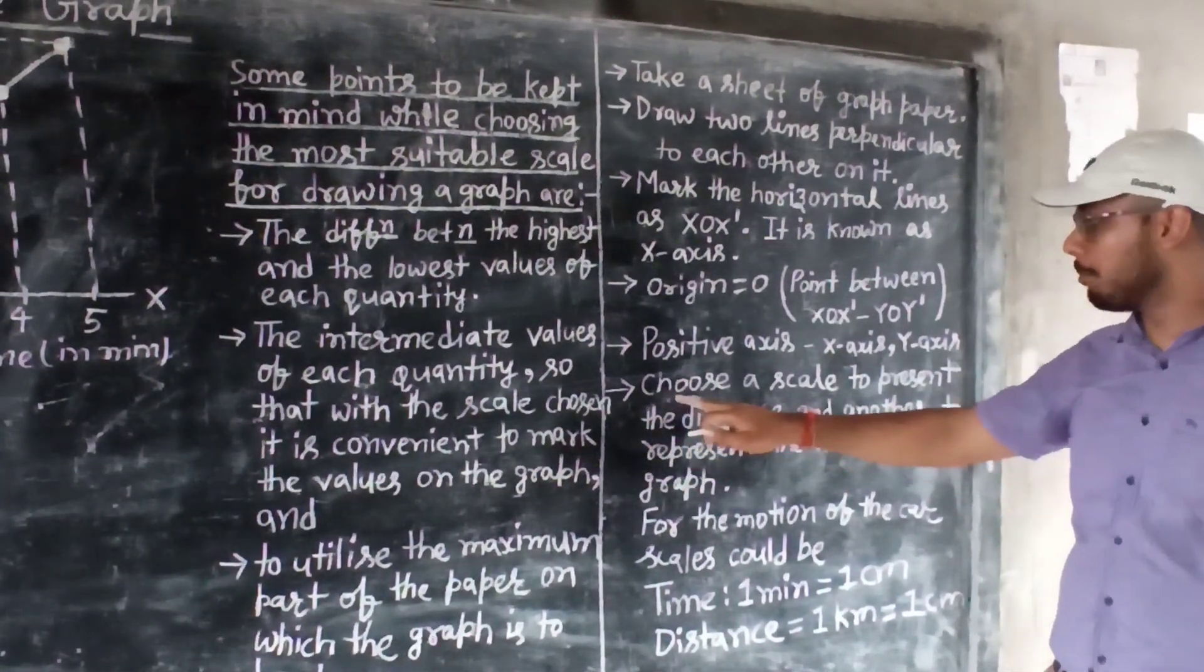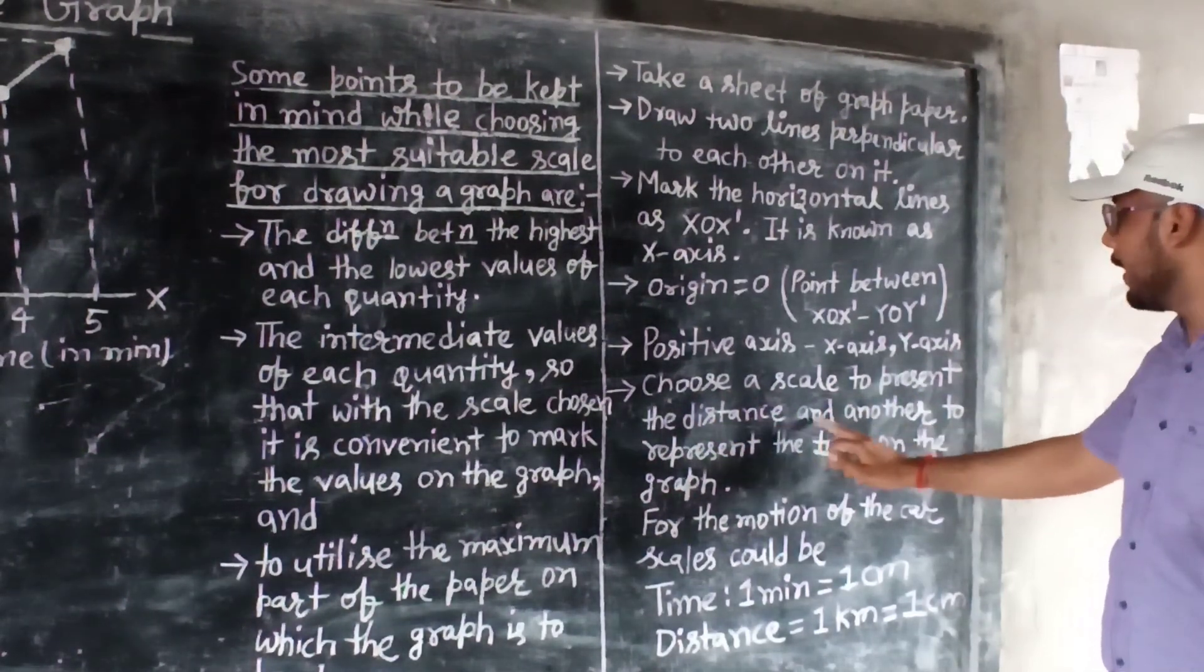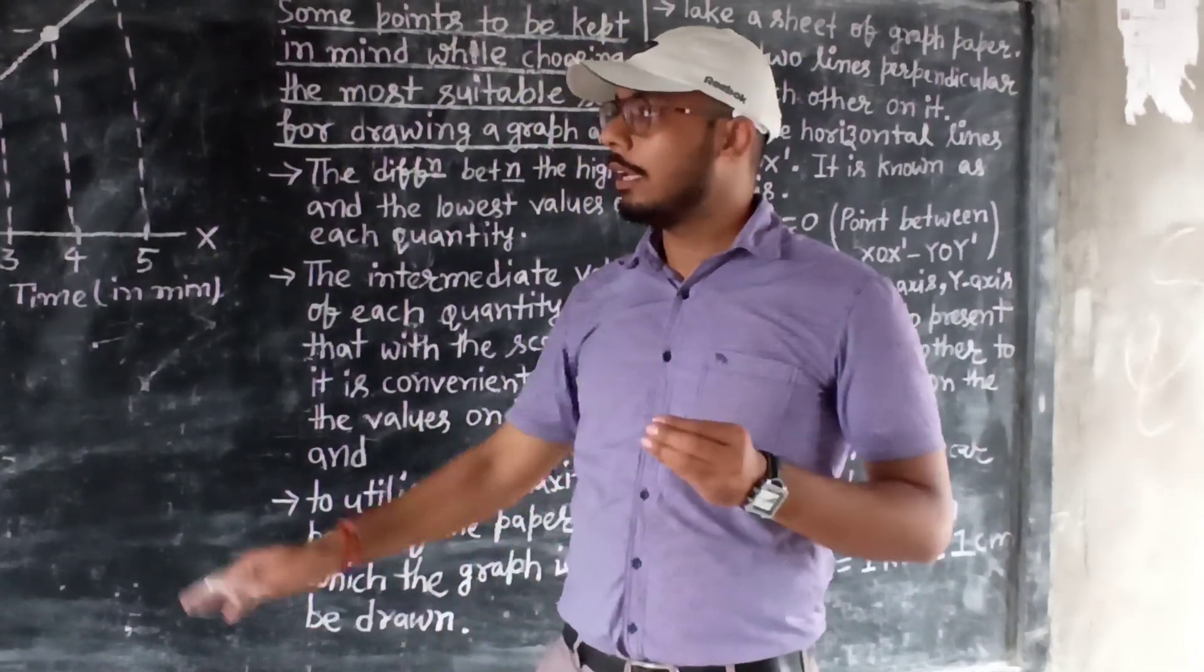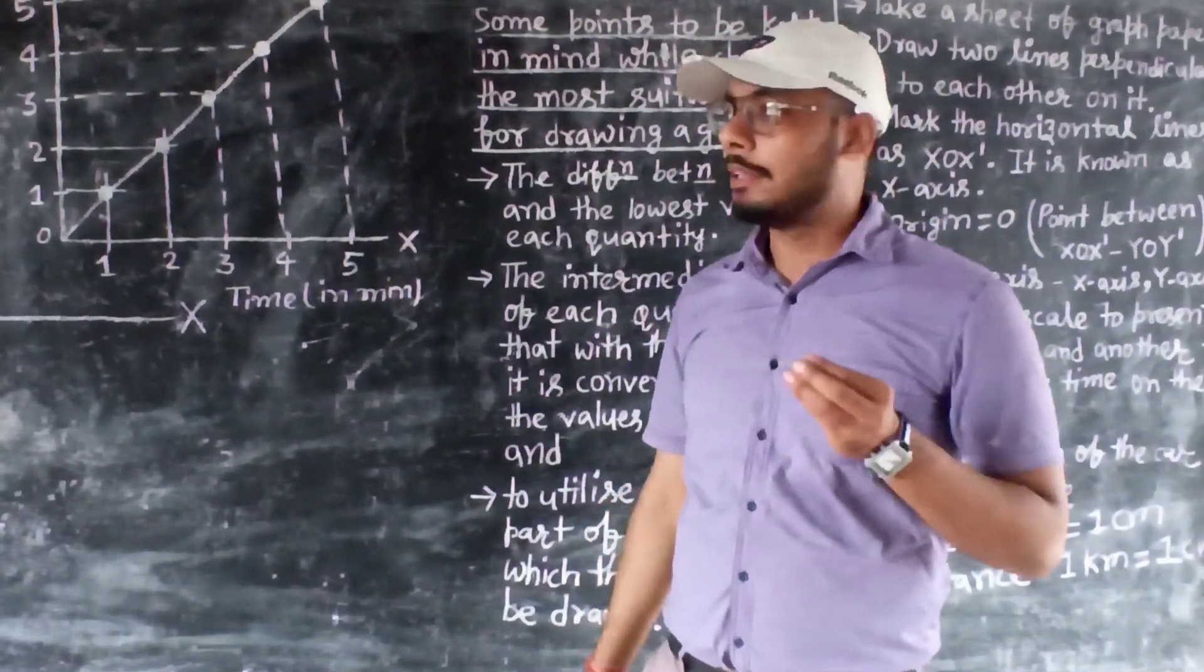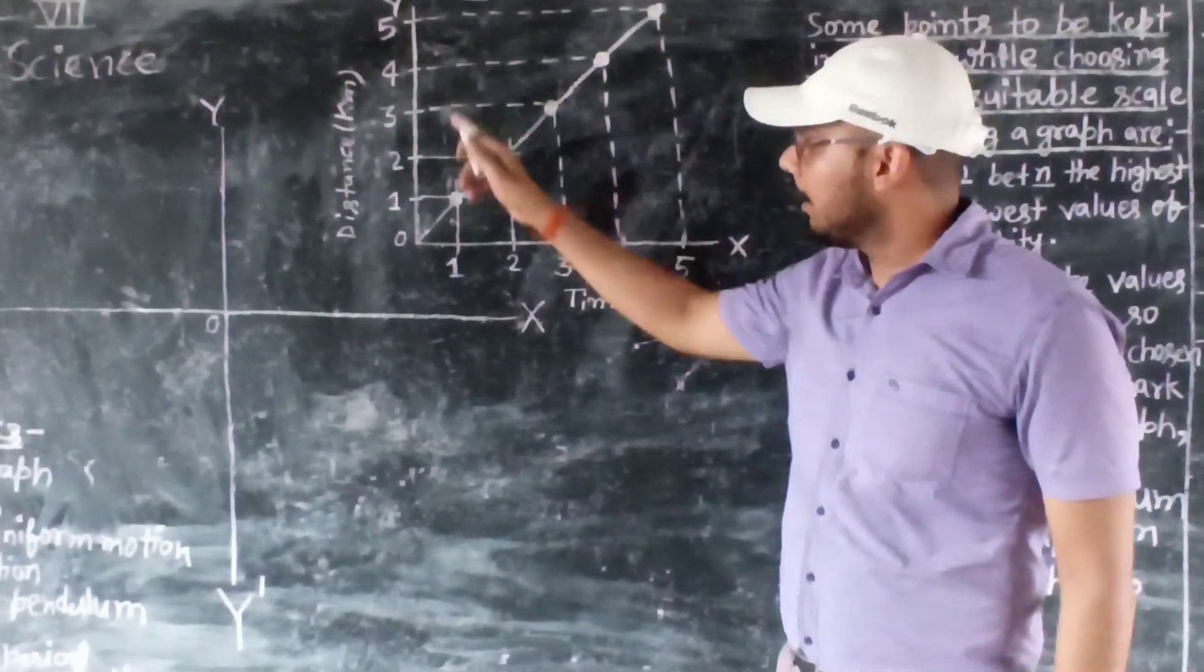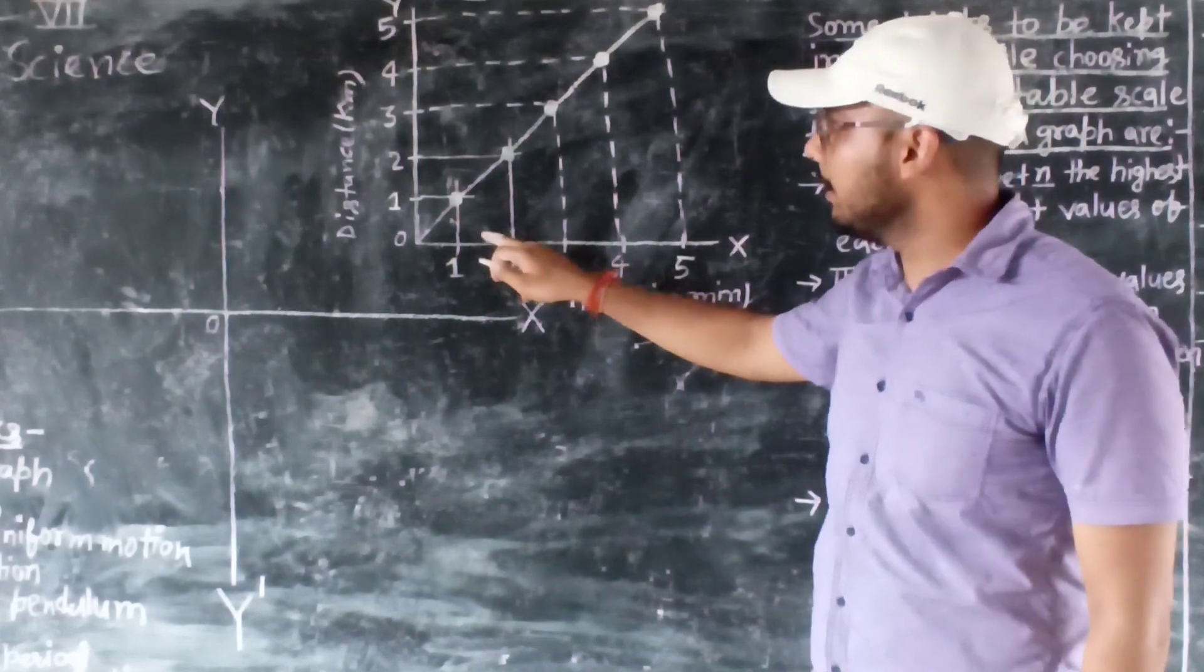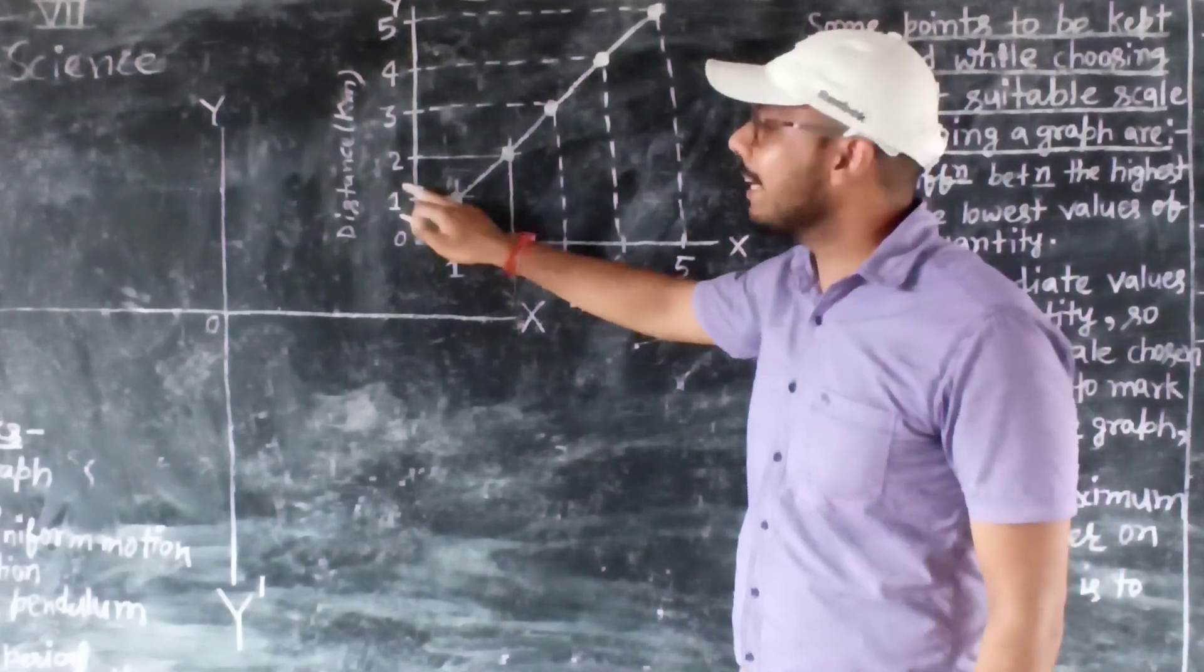And the second one, and last one actually, the main point is, choose a scale to represent the distance and another to represent the time on the graph. It means whenever you want to plot a line graph, you must know the scale. If I have made, here you can see, I made a line graph. You can see the distance and you can see here the time.